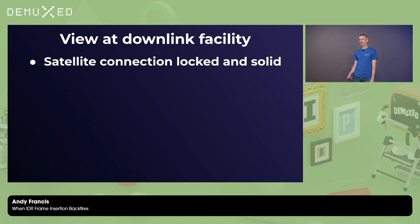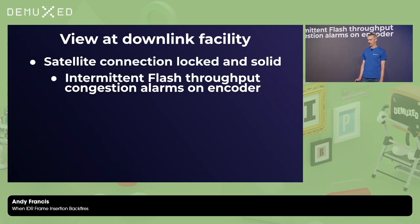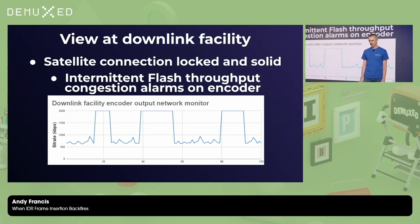At the downlink facility, the satellite connection was locked and solid the entire time. But on their encoder, they were getting some flash throughput congestion alarms every now and then. This was a facility with multiple events going on simultaneously, so they had a tightly managed network. The target bit rate for the Samsung stream was around 650 kilobits per second, and they had allocated a circuit with two megabits per second of upload bandwidth dedicated to that encoder — which should, in theory, have been enough. But looking at the output bit rate from the encoder, it was mostly hovering between 650 kbps and one megabit per second, with periods where it was spiking and slamming up against that two megabit per second allocation.